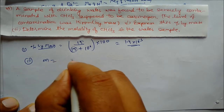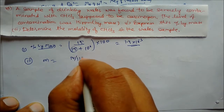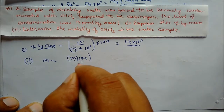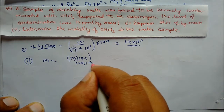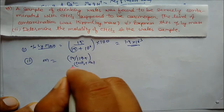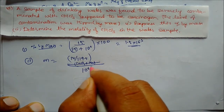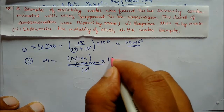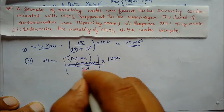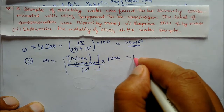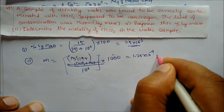For molality: moles of CHCl₃ = 15/119.5 (molar mass of CHCl₃). Molality = moles per liter; total volume is 10⁶, multiplied by 1000. This gives the answer 1.25 × 10⁻⁴ molality.